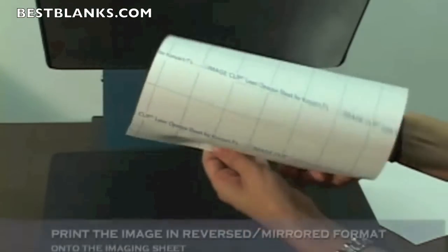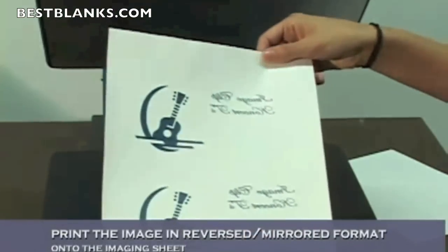The first step is to take your image and print it in reverse on the Image Clip for Concert Tees laser opaque paper.